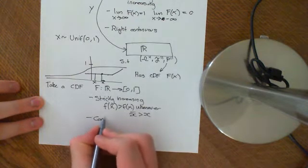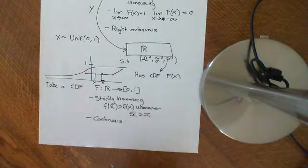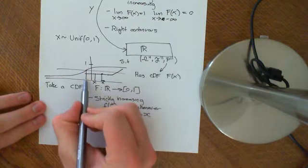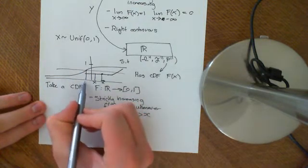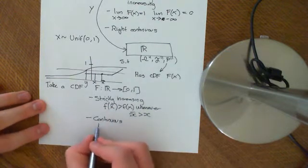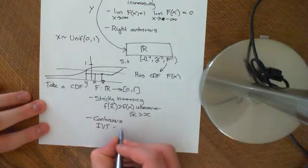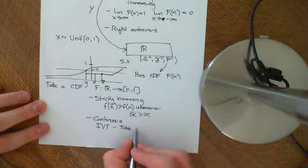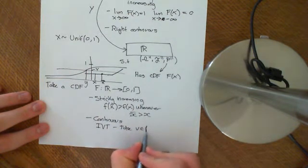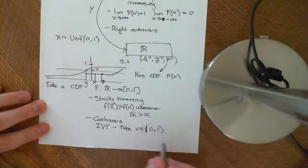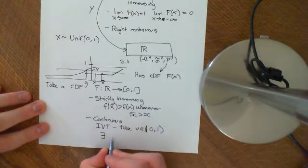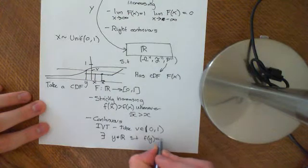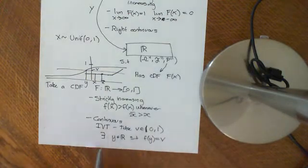We're also going to assume that F is continuous, which is very nice because it means it obeys the intermediate value theorem. So if you take any number v in the open interval (0, 1), there will exist some y in the real numbers such that F(y) = v.